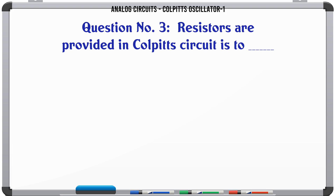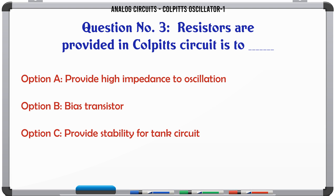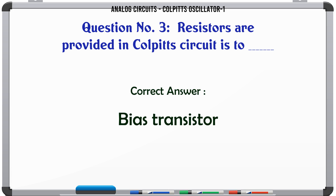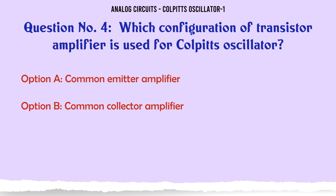Resistors are provided in Colpitt's circuit to: A) Provide high impedance to oscillation, B) Bias transistor, C) Provide stability for tank circuit, D) Increase impedance for oscillation. The correct answer is: Bias transistor.